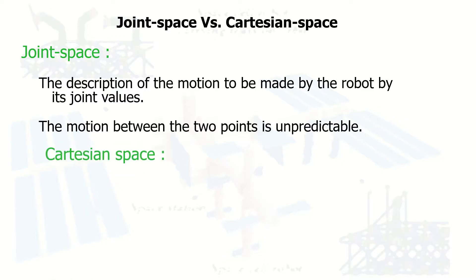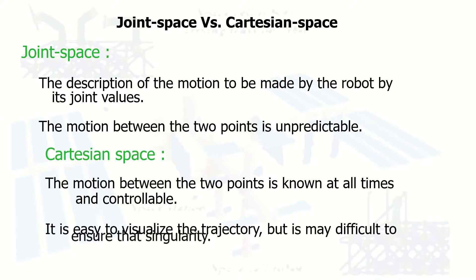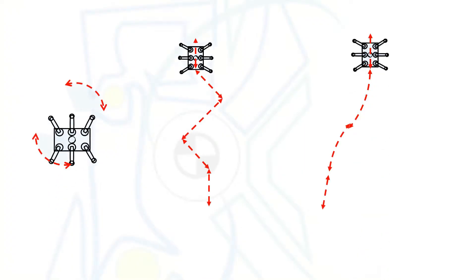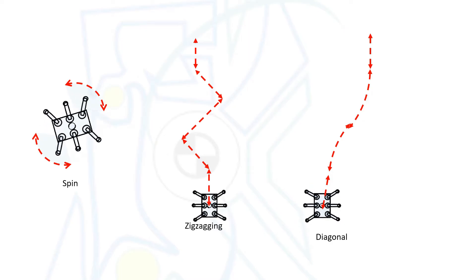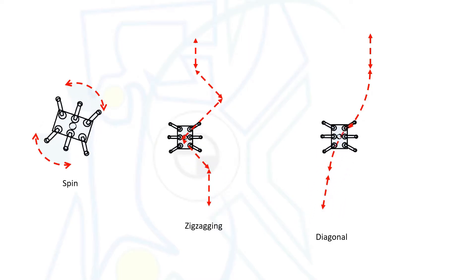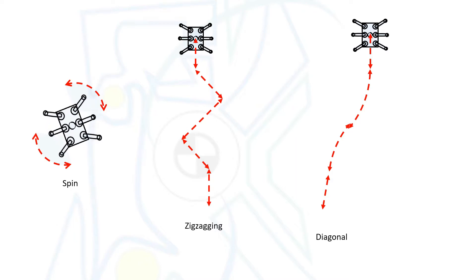It's different from the Cartesian space where the motion between two points means, for the case of robot arm, motion between two points of end effector movement. For the case of mobile robots, it's the motion between one point to another point in its waypoint path planning.